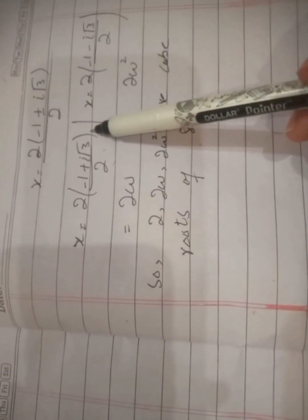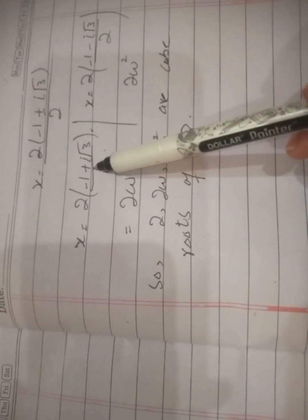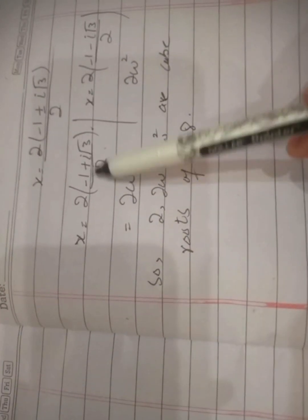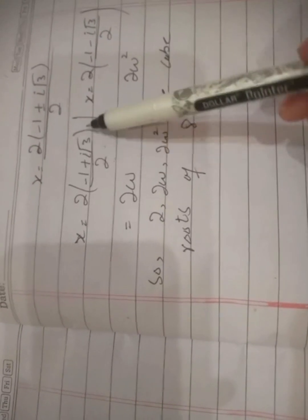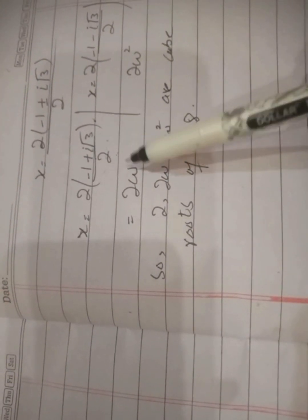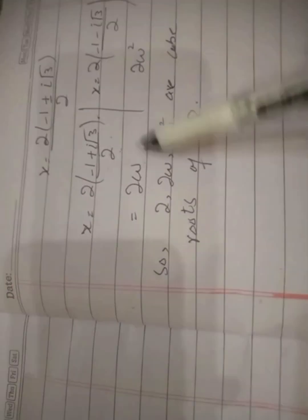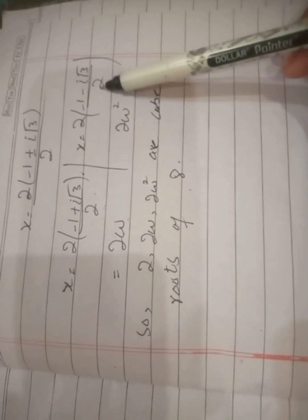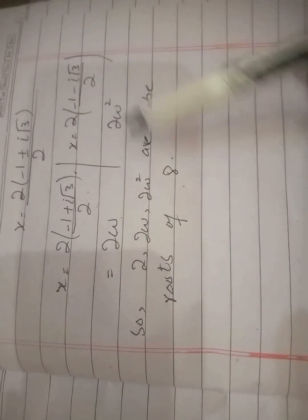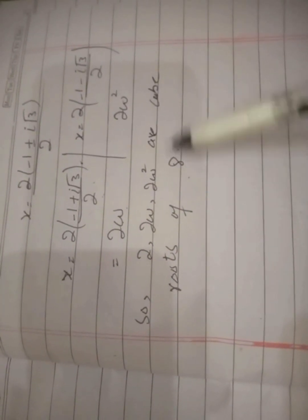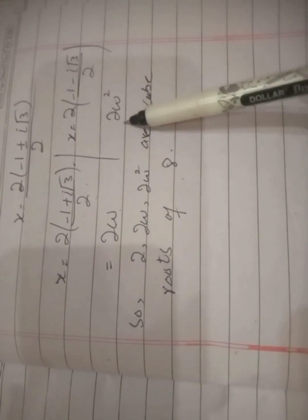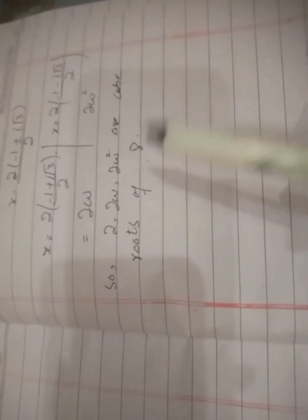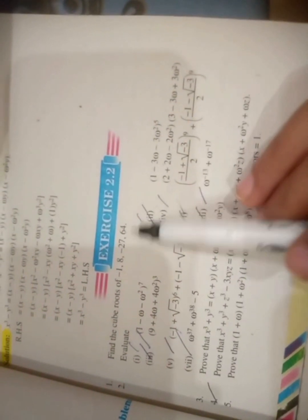Because we have found the cube root of unity, we assign the omega factors. The value minus 1 plus iota root 3 over 2 is the factor omega, and the value minus 1 minus iota root 3 over 2 is omega square. So multiplying by 2, the three cube roots of 8 are 2, 2 omega, and 2 omega square. This is the same pattern as finding cube roots of minus 27 or 64.